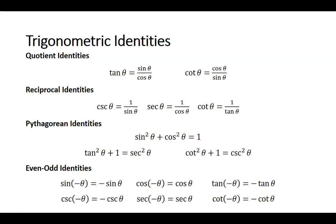Cosecant is odd, so cosecant of negative theta is equal to negative cosecant of theta. Secant is even, so the secant of negative theta is equal to the secant of theta. And cotangent is odd, so the cotangent of negative theta is equal to negative cotangent of theta.